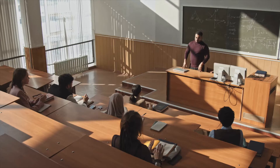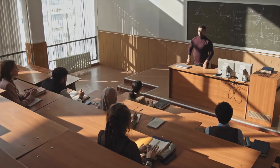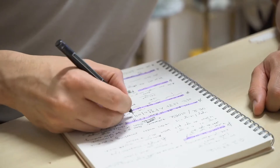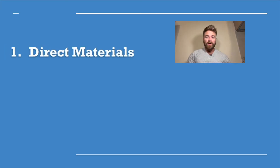I'm Nathan from Accounting University, and in today's video I will help you understand job costing in five minutes. In college you remember you took an accounting class that talked about the three main types of costs for any project. The three big categories of costs are direct materials, direct labor, and overhead.